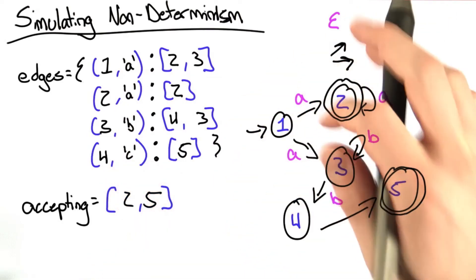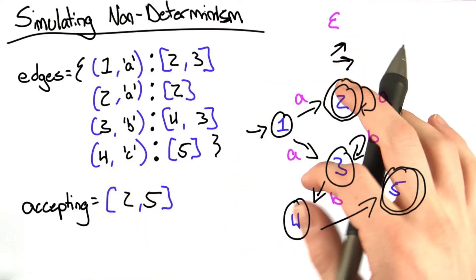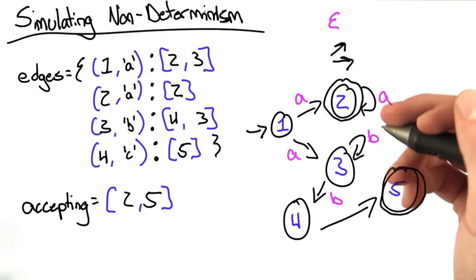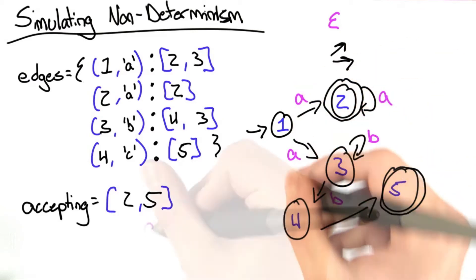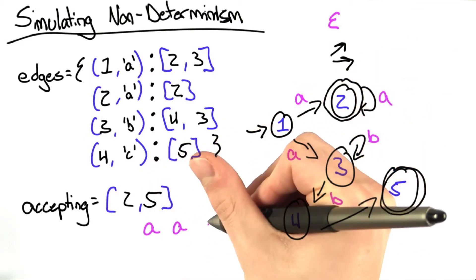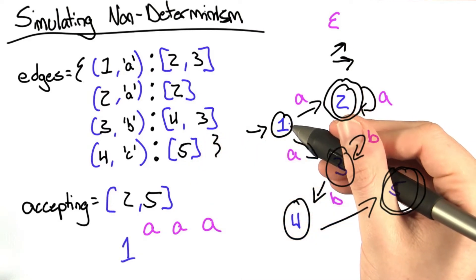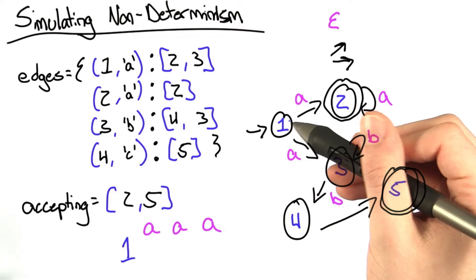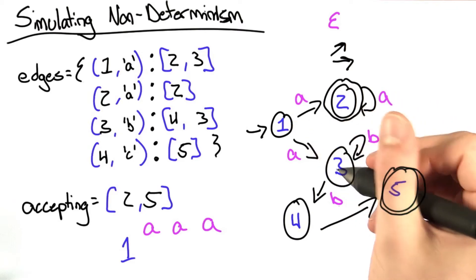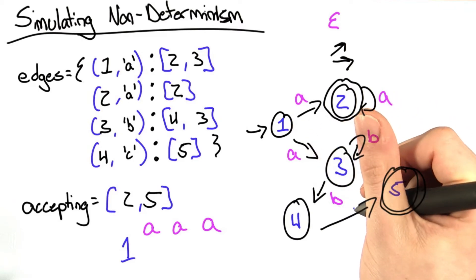So if you're a little rusty on your non-deterministic finite automata, let's go through an example string and see whether or not it's accepted. So let's say we have the string A, A, A. We start at state 1. From 1, we take the letter A to both 2 and 3. We're in two places at the same time.